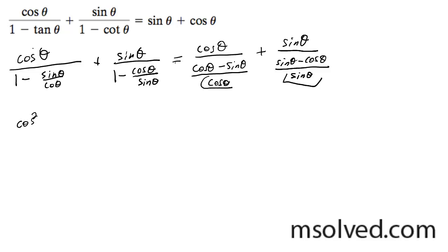it's going to become cosine squared theta over cosine theta minus sine theta plus sine theta—excuse me—sine squared theta over sine theta minus cosine theta.